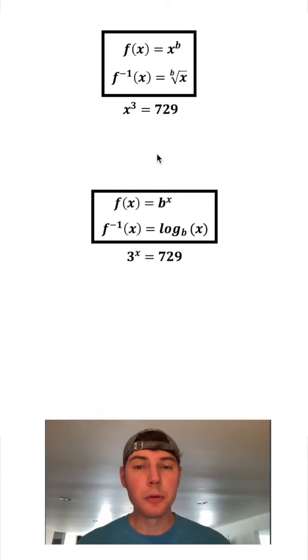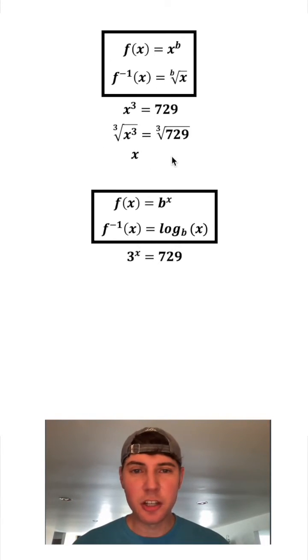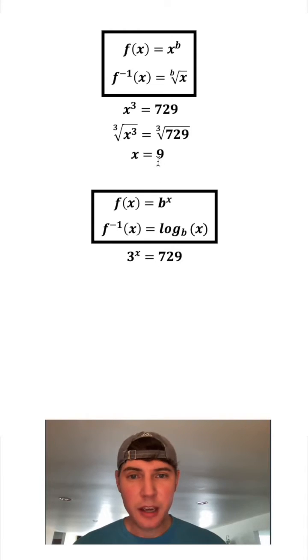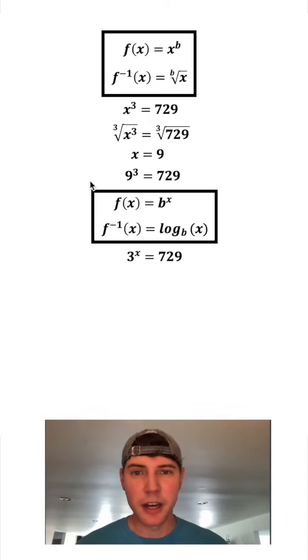So to solve this one, we're going to cube root both sides of the equation. On the left hand side, the cube root is the inverse operation of x cubed, so we're left with x. On the right hand side, the cube root of 729 is equal to 9. That's because 9 times 9 times 9 equals 729. And we can check our work. If we plug this 9 into the x, we'll get 9 to the 3, and that does equal 729, so the process checks out.